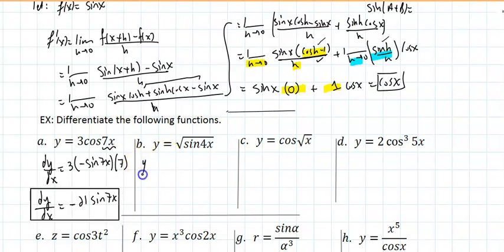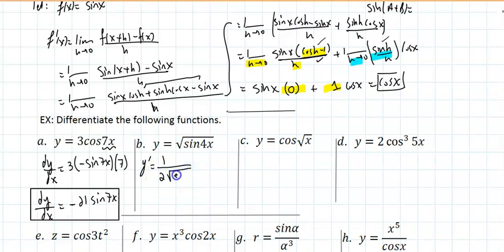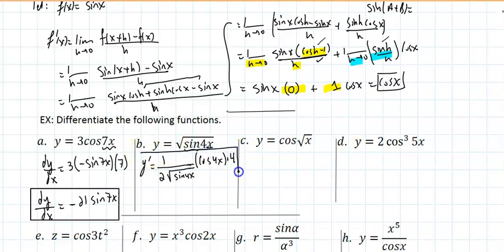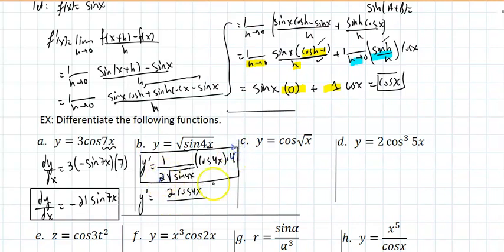For part (b), finding the derivative of y = √(sin(4x)): y' = 1/(2√(sin(4x))) times the derivative of the radicand by the chain rule, which gives cos(4x) times 4. On a test that's a fine answer; for homework you should clean it up: 4 divided by 2 simplifies, giving 2cos(4x)/(2√(sin(4x))).